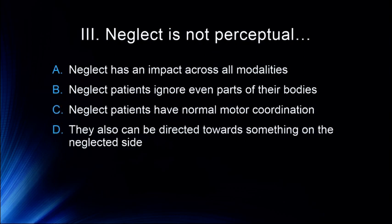These patients have normal motor coordination — with some neglect patients, if you throw something at them on the left side, they can catch it. They can be directed towards something on the neglected side. Some treatments for neglect include putting everything on the left side so that they have to constantly force themselves to pay attention to that side to reestablish that pathway. What neglect patients will do is complain that they only got half a dinner because they only see half of it on their plate. They'll put makeup on one side of their face and shave one side of their face.